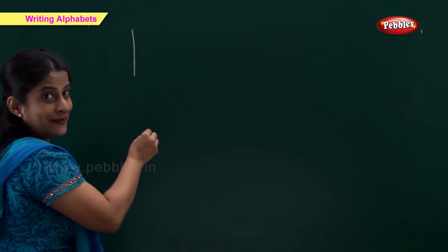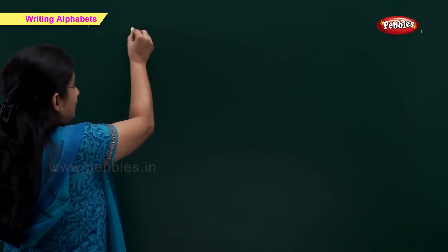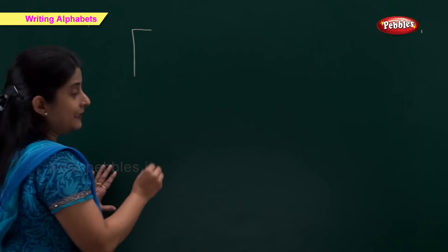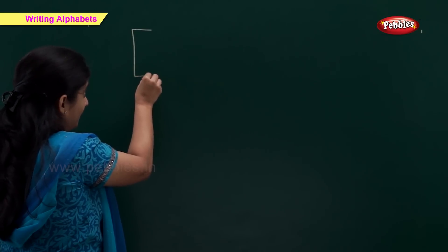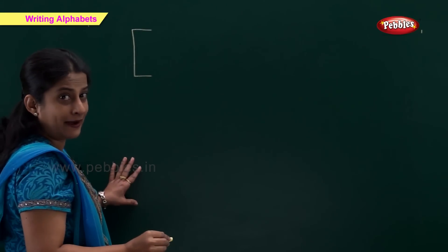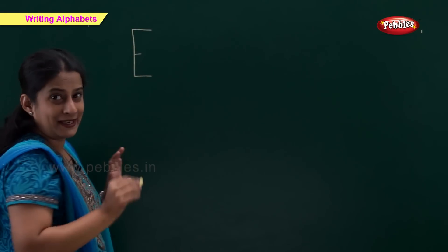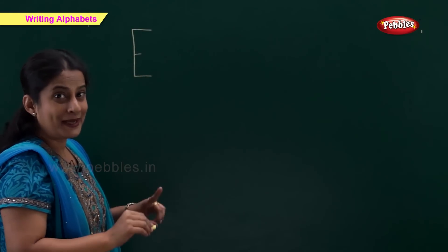A. One standing line. One sleeping line. Another sleeping line. And a small sleeping line in between. Makes E.